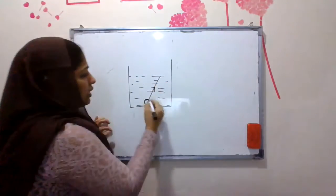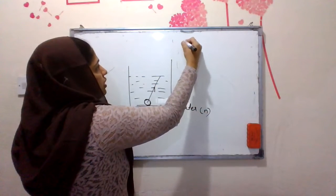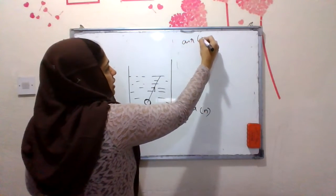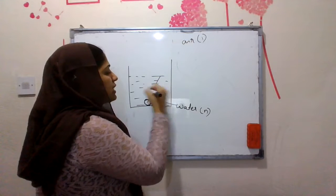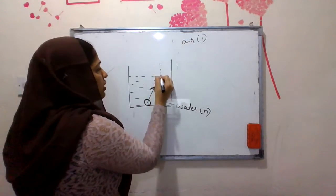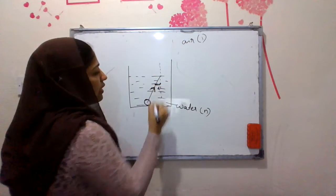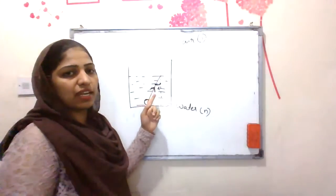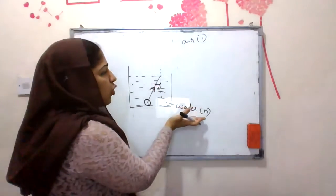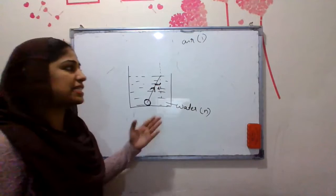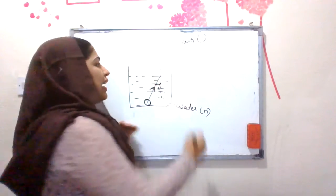Suppose this is water with refractive index N, and the refractive index of air is 1. Light is incident from this medium — this is the incident ray. At this point we can draw a normal. The angle between the incident ray and the normal is the angle of incidence. The ray of light bends, going from denser medium to rarer medium, so it bends away from the normal.